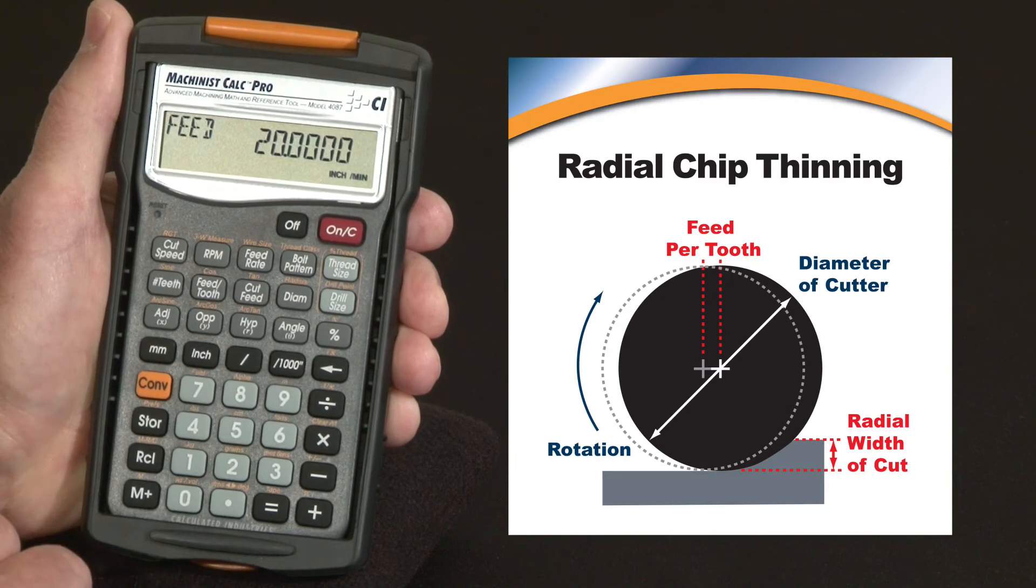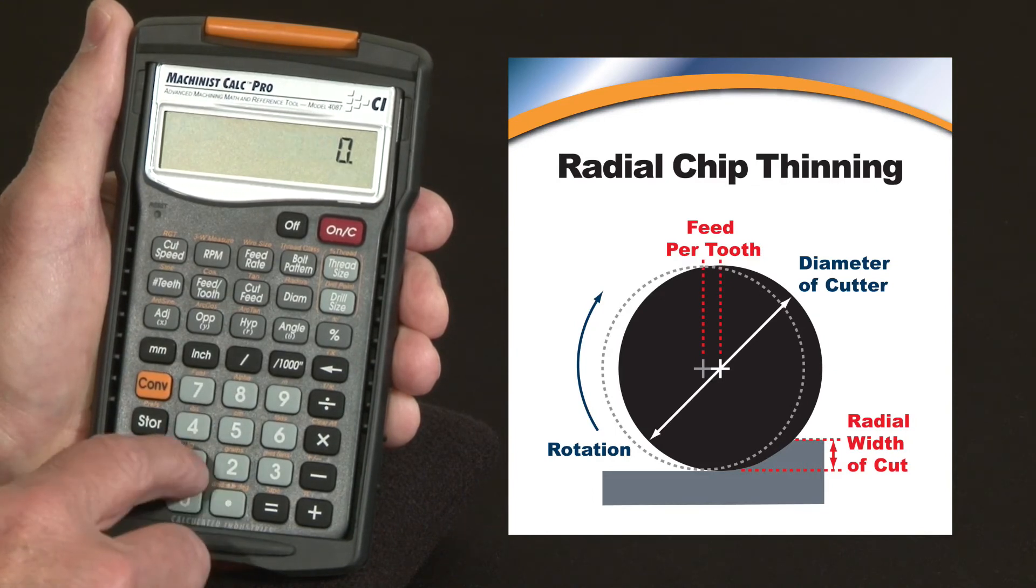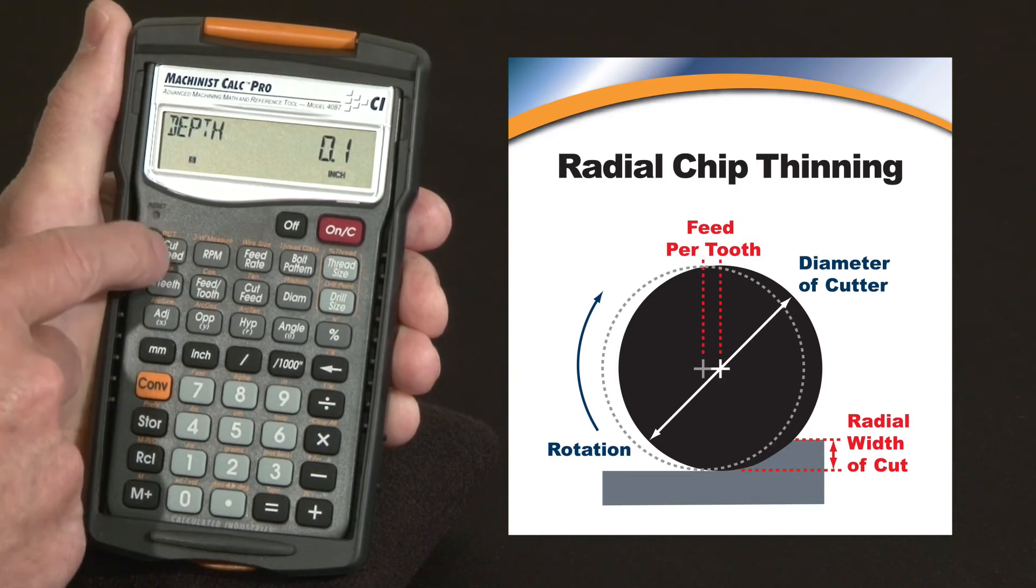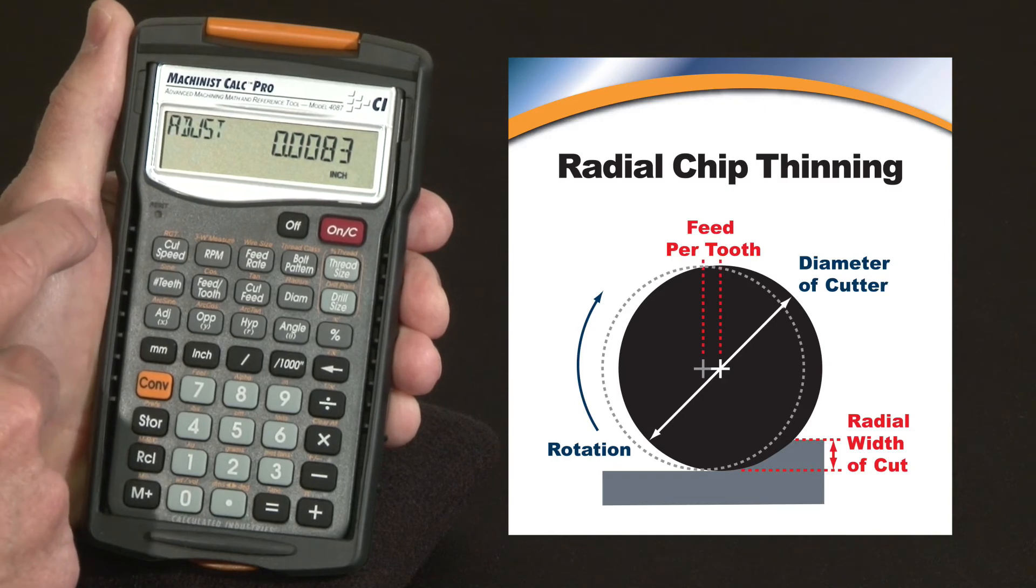You can leave everything else in there, and let's just put in the cut depth, point one, and then I hit convert, and over the cut speed key we have the radial chip thinning. Enter it. It says depth. Press it once more. There it says our adjusted feed per tooth is going to be about 8 thousandths.